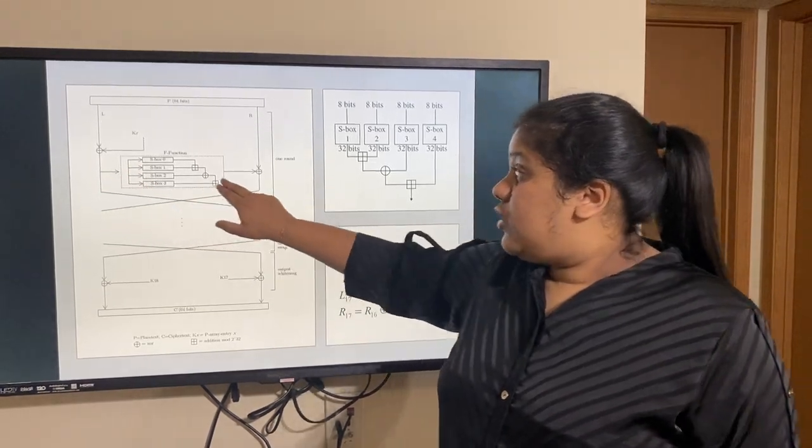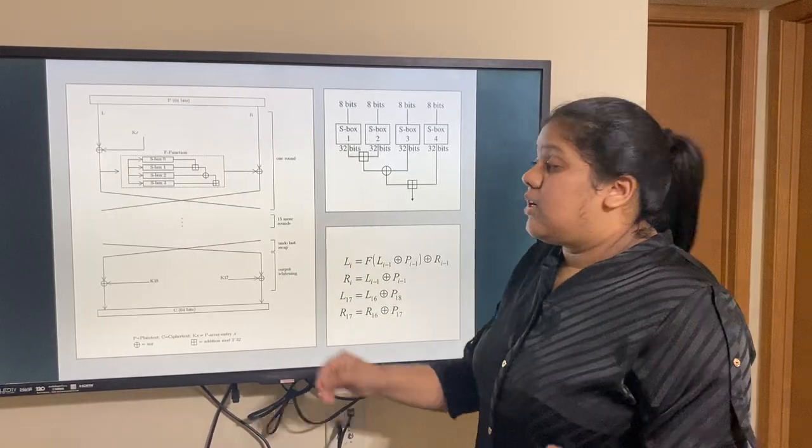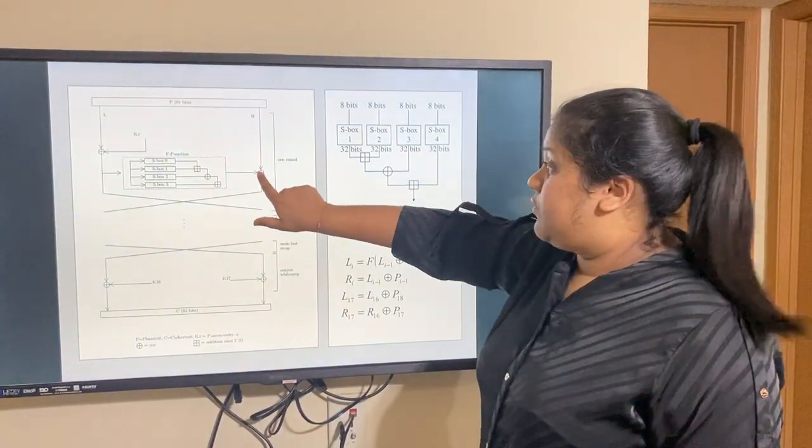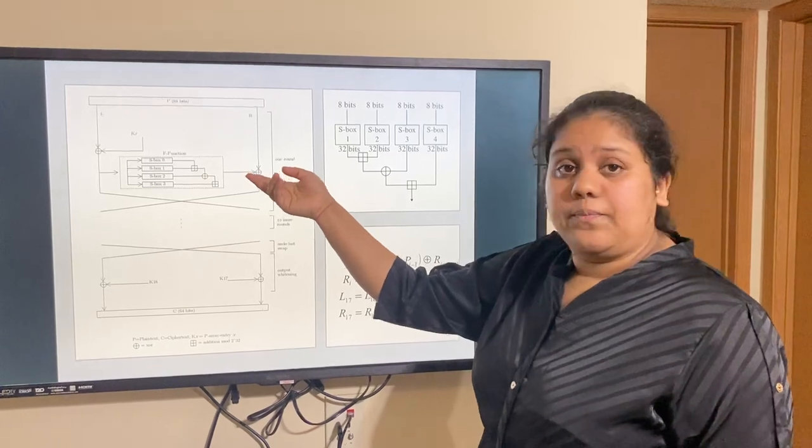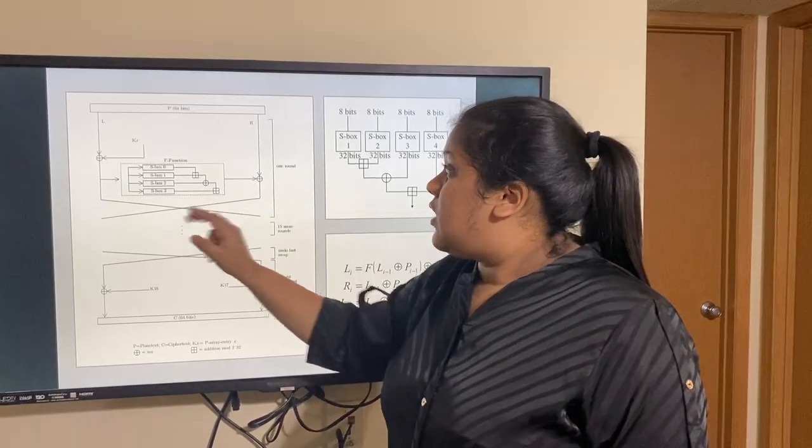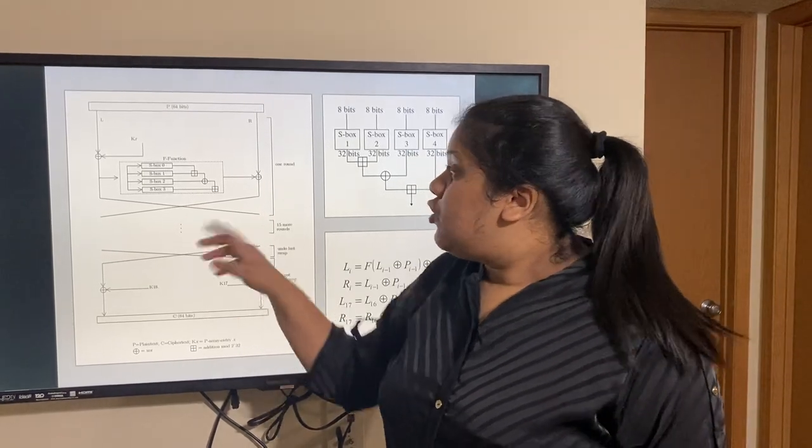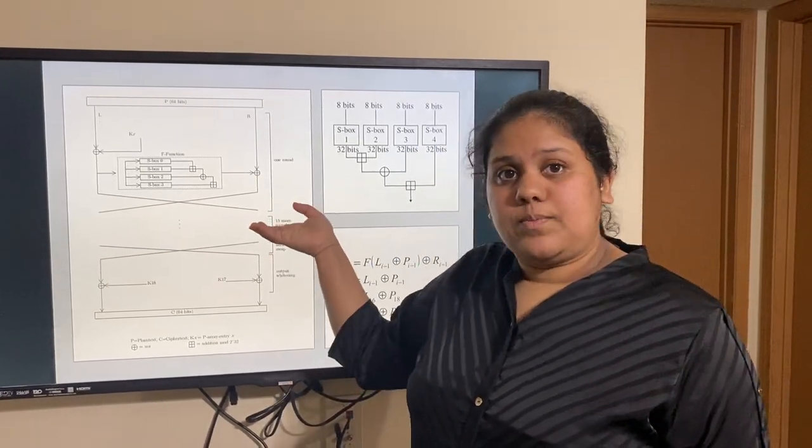So, the value that goes through the F function, for our third step what happens is, it is XORed with the right hand side part of the plaintext. And then we get a value. These two values, that is the copy here and this value, are swapped to create L2 and R2 respectively.